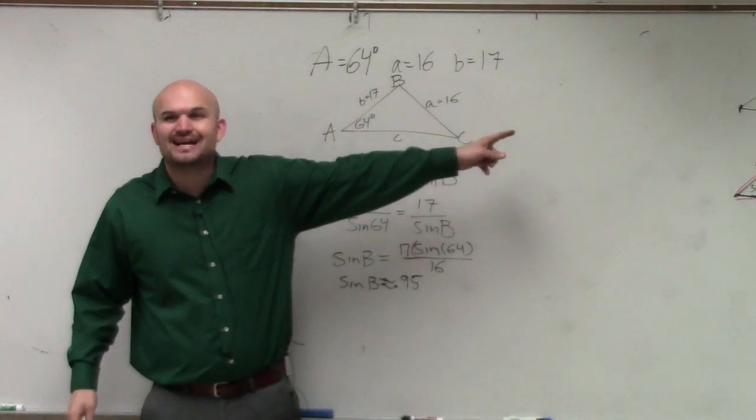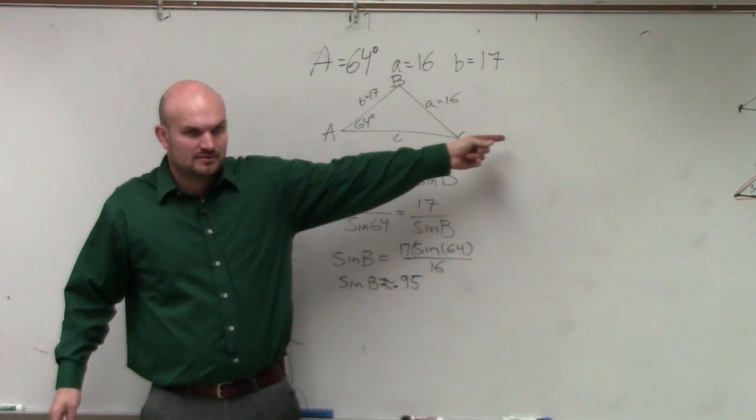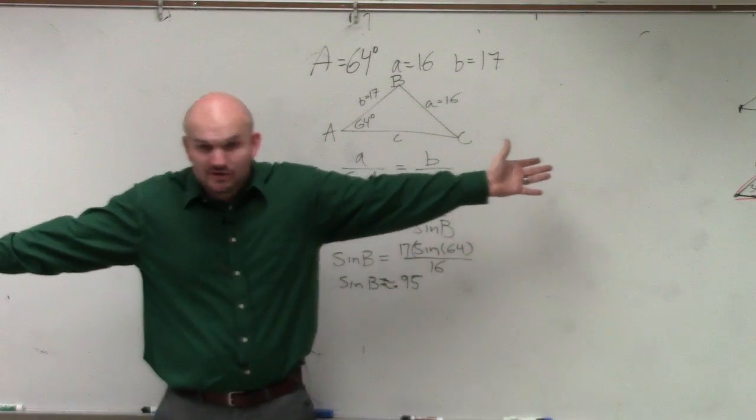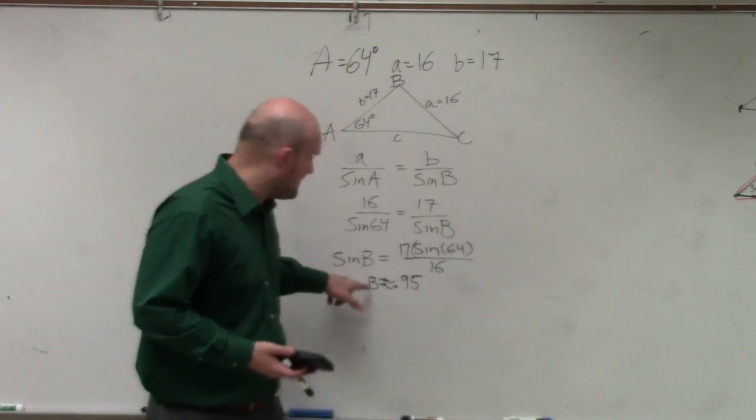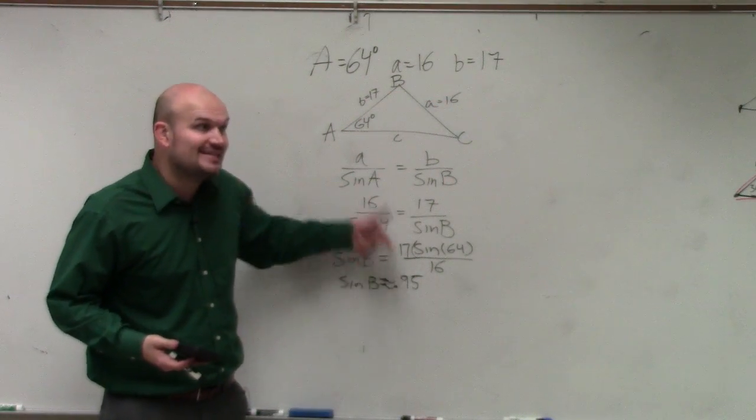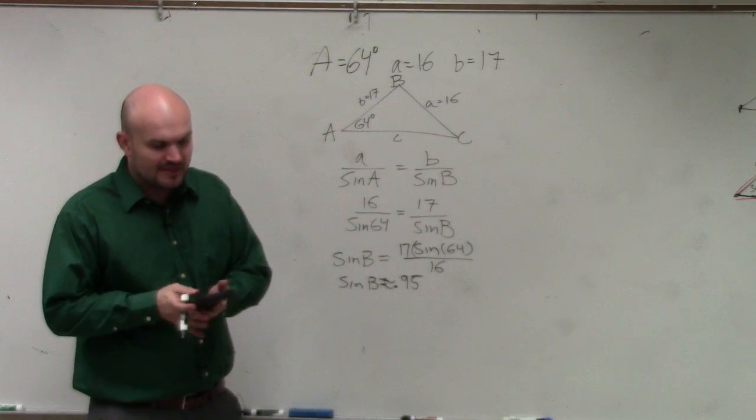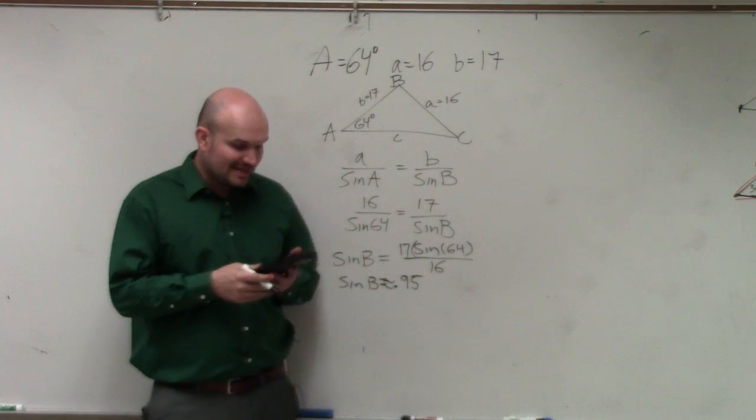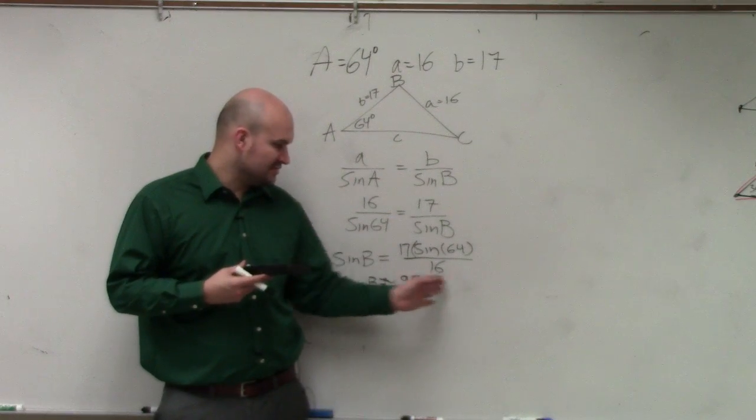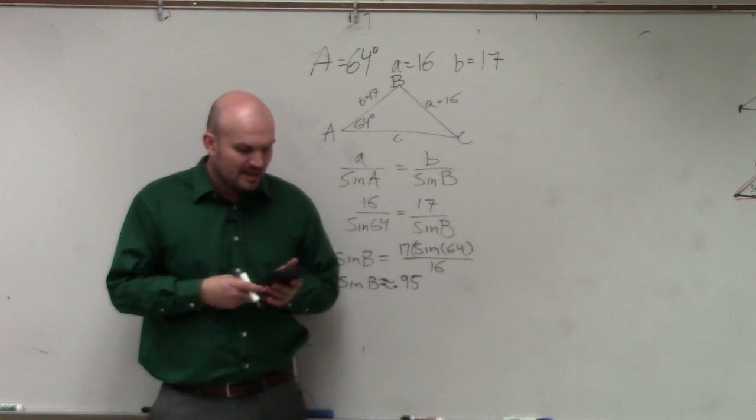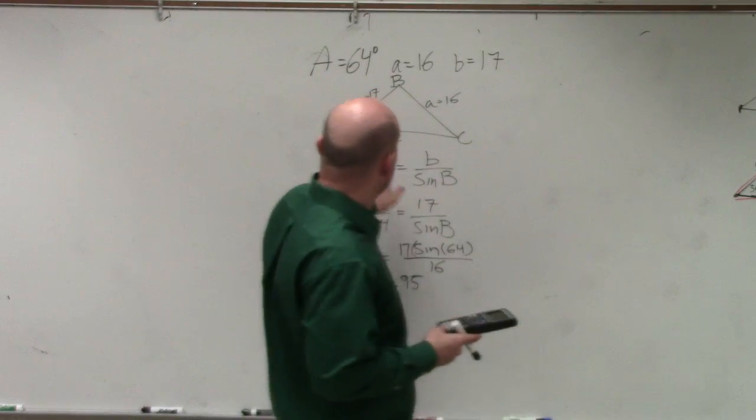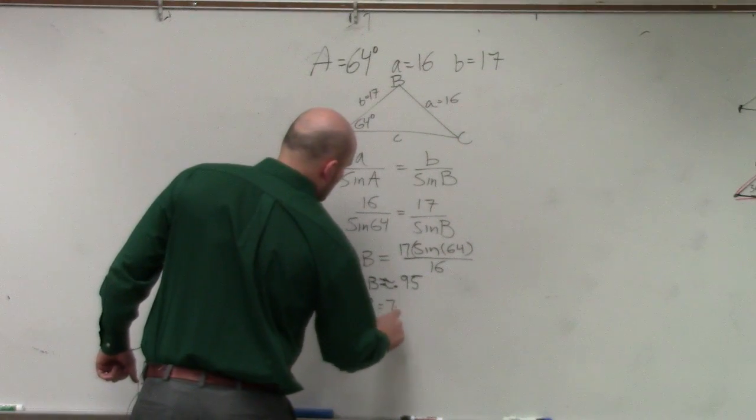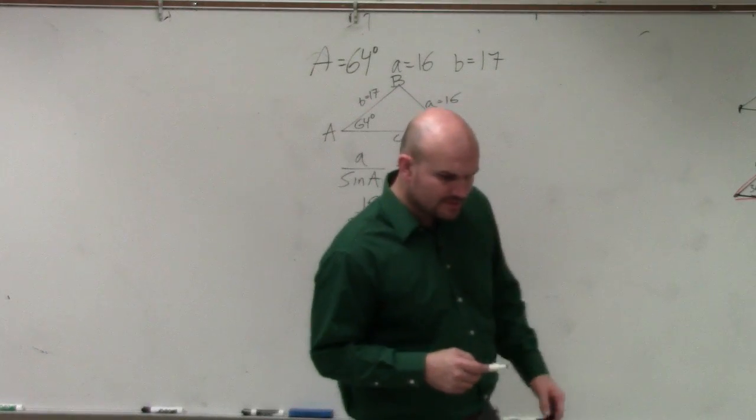Now, do you guys remember what we did over here? Remember we had sine of x is equal to 1 half, right? How did we find the sine of x? We used the inverse. So I'm going to do sine inverse. I'm going to use the whole answer in my calculator, or you can just round this as much as best you can and then input it in. And what I get is 72.74.